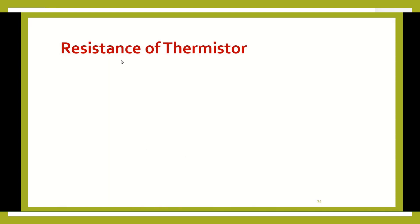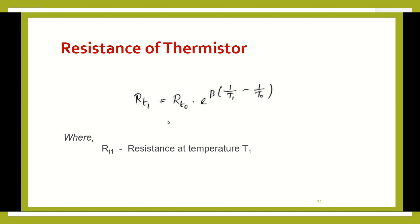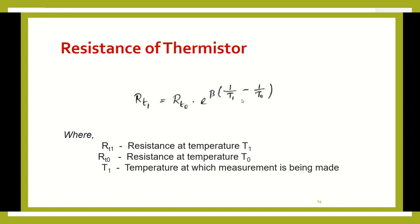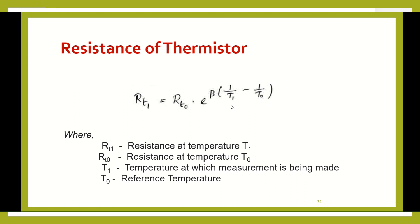We calculate the resistance of the thermistor using the formula: RT1 = RT0 × e^(β × (1/T1 − 1/T0)), where RT1 is the resistance at temperature T1, RT0 is the resistance at reference temperature T0, T0 is the reference temperature, T1 is the temperature at which we are measuring, and β is called the temperature coefficient.